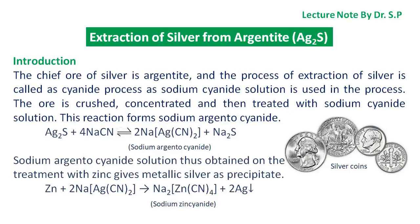In this tutorial we will discuss extraction of silver from argentite. The chief ore of silver is argentite, and the process of extraction of silver is called the cyanide process, as sodium cyanide solution is used in the process.